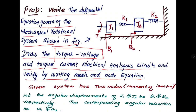In the given system, there are two mass elements. The moment of inertia of the first is J1 and the second is J2. There are two springs: one spring is connected between J1 and J2, and another spring is connected to the reference. Friction between the reference and J1 is B1, and friction between J2 and the reference is B2. Torque T is applied on J1. The angular displacements are theta-1 for J1 and theta-2 for J2.